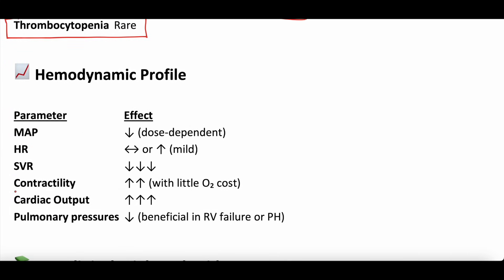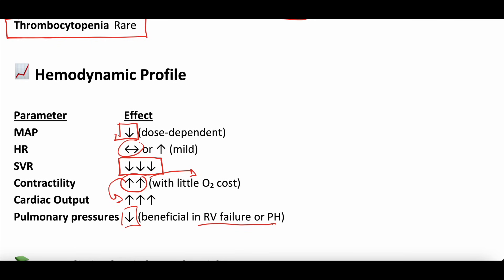The hemodynamic profile relates to the mechanism. For systemic vascular resistance and mean arterial pressure, it causes vasodilation — so it decreases SVR, which then decreases MAP. It does not tend to significantly affect heart rate, maybe mildly. It increases contractility with little O2 cost, because it does not increase myocardial oxygen demand — very different from dobutamine, milrinone, and epinephrine. Increasing contractility increases cardiac output, and it can also decrease pulmonary vascular resistance, potentially benefiting RV failure and pulmonary hypertension.